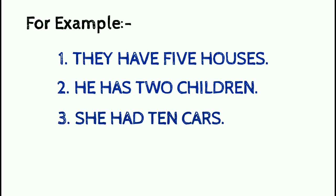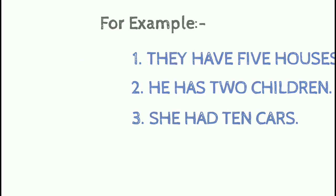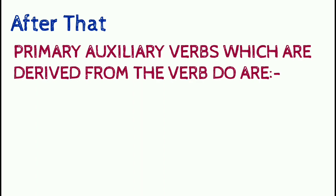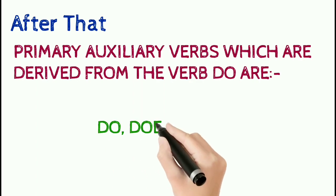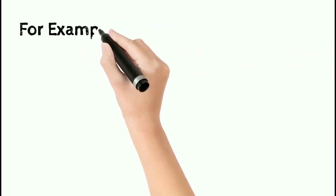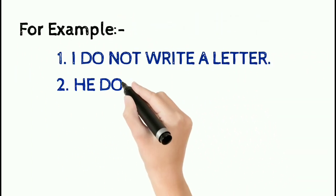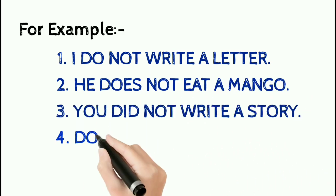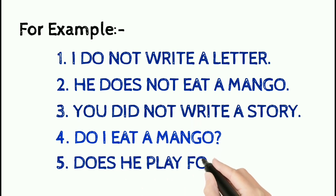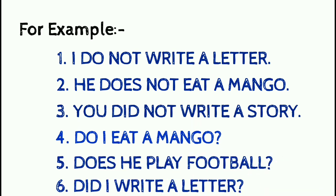Different types of pronouns are used with these verbs. Primary auxiliary verbs derived from the verb 'do' are: do, does, and did. For example: I do not write a letter. He does not eat a mango. You did not write a story. Do I eat a mango? Does he play football? Did I write a letter? In the above examples, do, does, and did are required for negative sentence formation. In questions like 'Do I eat a mango?', 'Does he play football?', and 'Did I write a letter?', do, does, and did are used for interrogative sentences.